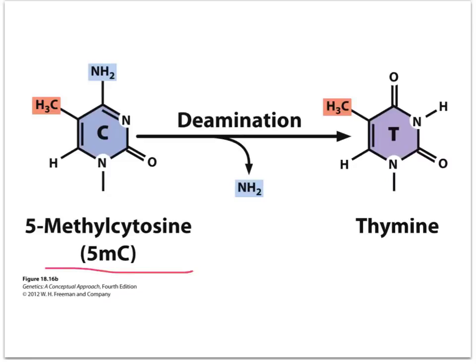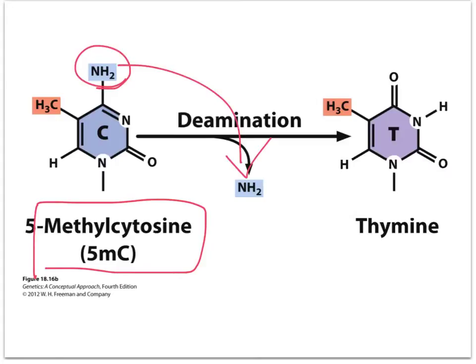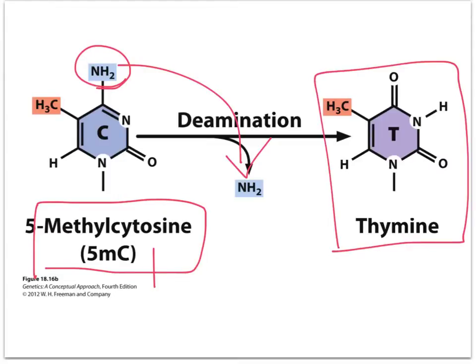Another example would be methylated cytosine — 5-methylcytosine. If we remove that amino group, that nitrogen-containing group, now this is normal thymine. Cytosine, even with that methyl group, still hydrogen bonds to guanine, but now thymine is going to bond with adenine. This would not look like a mistake, so proofreading won't fix this, and neither will any of the repair mechanisms, because the base sitting there is thymine and it appropriately bonds to adenine. But that's still a mutation — it was supposed to be a CG and it became a TA.